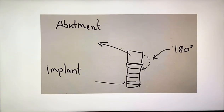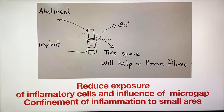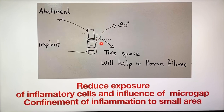Third, in platform matching there is a surface area of 180 degrees, meaning there is direct contact of inflammatory cells with both hard and soft tissues. While in platform switching the surface area is about 90 degrees. This space helps to form fibers, reduces the exposure of inflammatory cells, and has influence on the micro gap. This will help in confining the inflammation to a smaller area, whereas in the 180-degree case there was no such confinement.